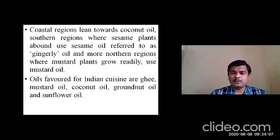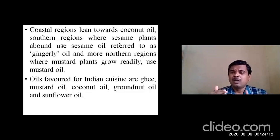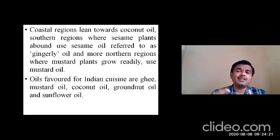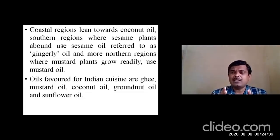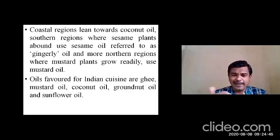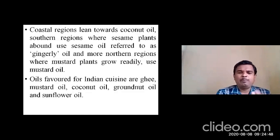In North India, states like Uttar Pradesh and Rajasthan mainly use Sarsapa Thaila, as they abundantly cultivate mustard. In olden days, most food preparations used Thila Thaila, but this has come down. Depending on the area, conditions, and even seasons, different types of Thailas are used, and people become accustomed to that type of preparation.